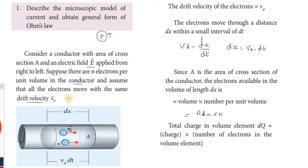Electrons are free and move. In a conductor, electrons are free and move, while the nucleus will remain attached. If the nucleus detaches, that is a non-conductor. This is a semiconductor.